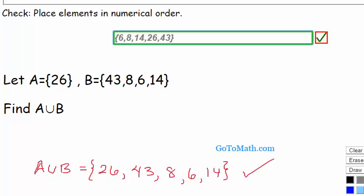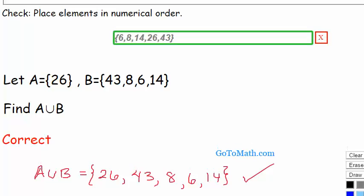Like I said, order doesn't matter when we're writing elements in a set, but just for this purpose here we have to write it in numerical order. And it does say correct. So union, the union operator means you just join this set with this set here.